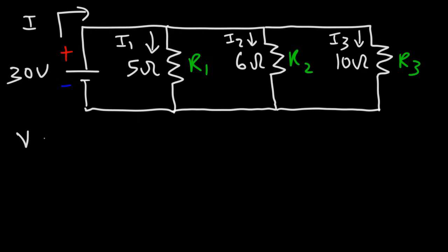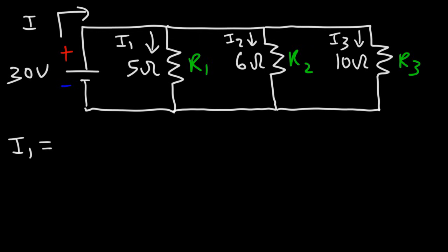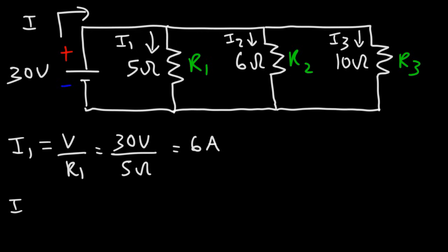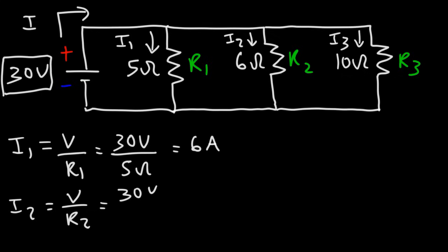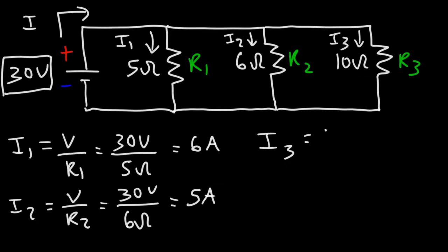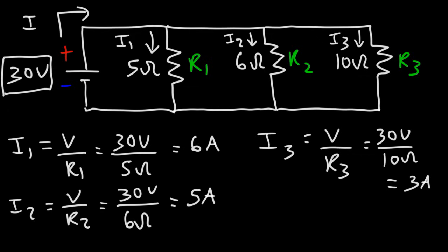Using i1 = V/R1: V is 30 volts, R1 is 5 ohms, so 30 divided by 5 gives a current of 6 amps. i2 = V/R2. The 30-volt battery is connected across all three resistors, so in a parallel circuit all resistors have the same voltage. R2 is 6 ohms, so 30 divided by 6 is 5 amps. For i3 = V/R3: that's 30 volts divided by 10 ohms, giving a current of 3 amps.